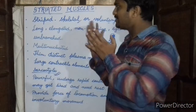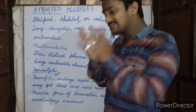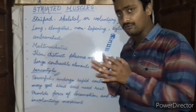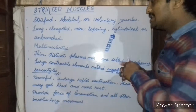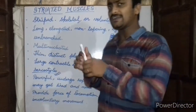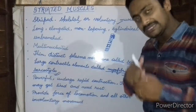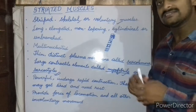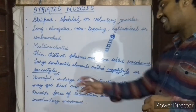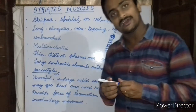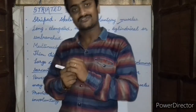Now, what are the uses of striated muscles? These striated muscles are very powerful and they undergo rapid contractions. However, they may get tired and may need rest. These striated muscles also provide force of locomotion for voluntary movements.